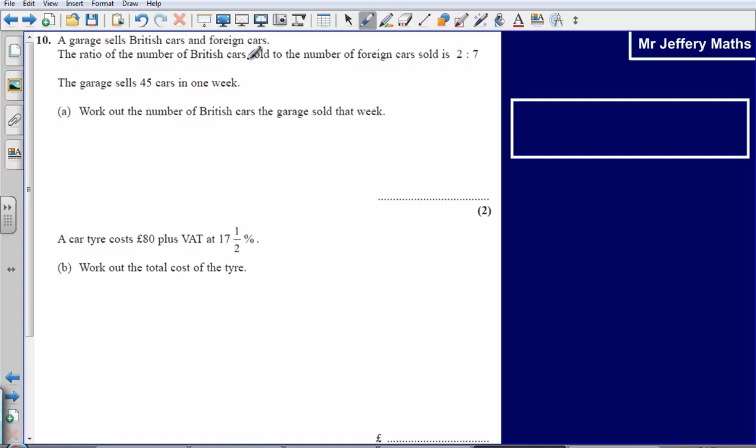The ratio of the number of British cars sold to the number of foreign cars sold is 2 to 7. The garage sells 45 cars in one week. So 45 cars, that's going to represent everything that I've got, and so I'm going to say that my bar is worth 45 cars.